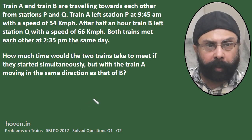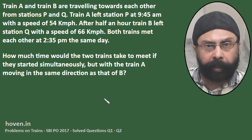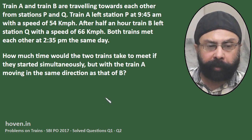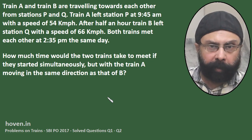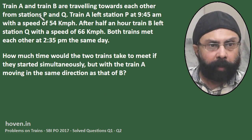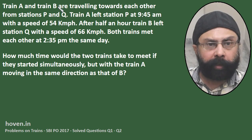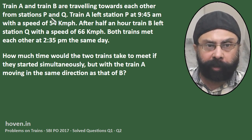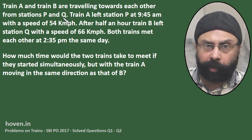This question has been taken from the SBIPO 2017 mains exam — it is memory based as usual. Two trains, train A and B, are travelling towards each other from stations P and Q.